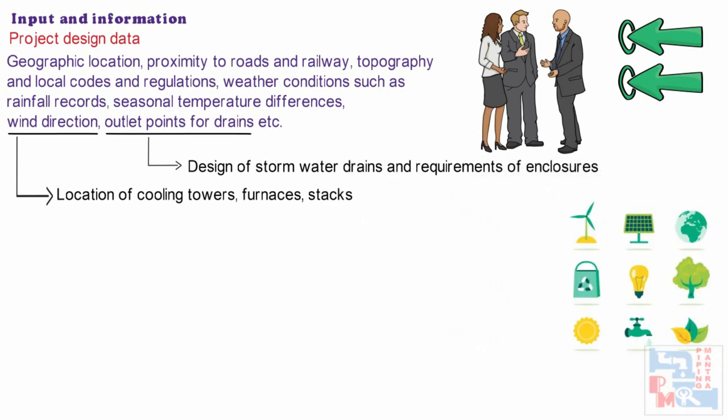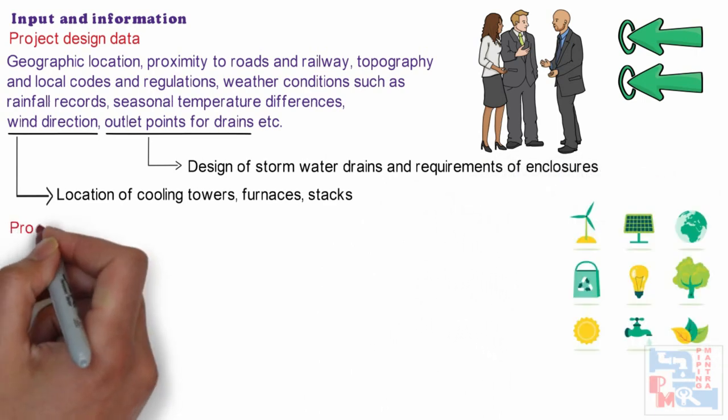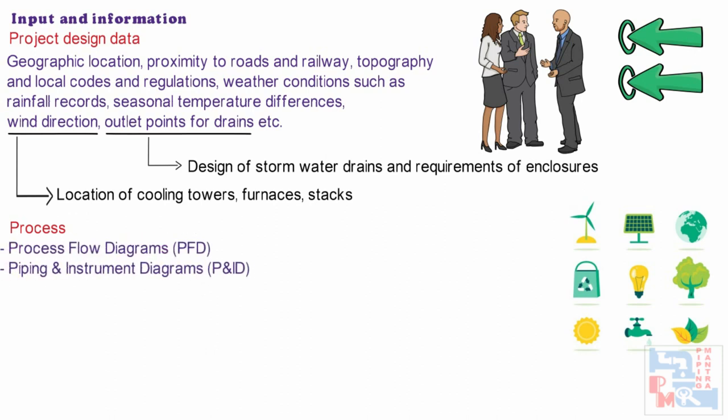Now let's see what input we need from process. We need process flow diagrams, PFDs, and Piping and Instrumentation Diagrams (P&IDs). PFDs and P&IDs indicate the interconnectivity of each equipment, information regarding solid handling, gravity feed, line slopes, loop sizes, venting requirements, special piping materials, etc., which in turn govern the equipment location to a great extent.